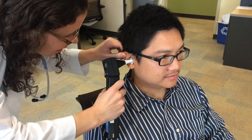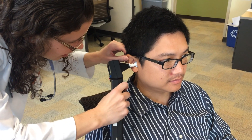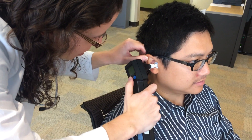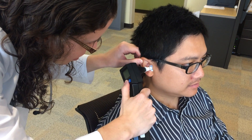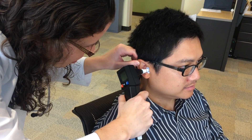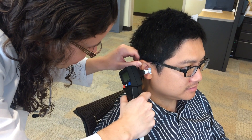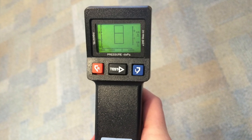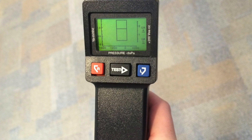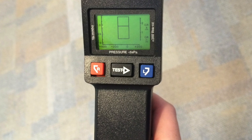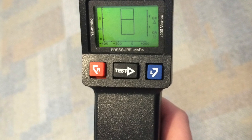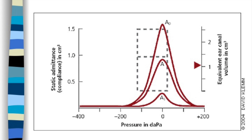Many people say that getting an airtight seal is the hardest part about working a tympanometer. I like to start with larger earplugs and work my way smaller if needed. Don't let the buttons confuse you. Press test to run a test, then R or L to save as right or left ear.